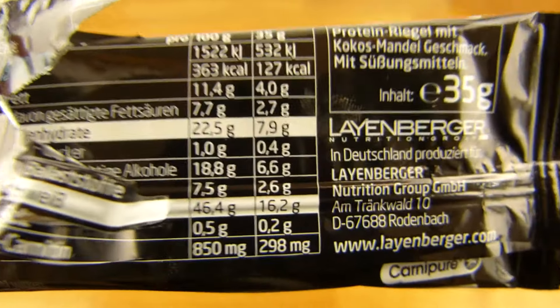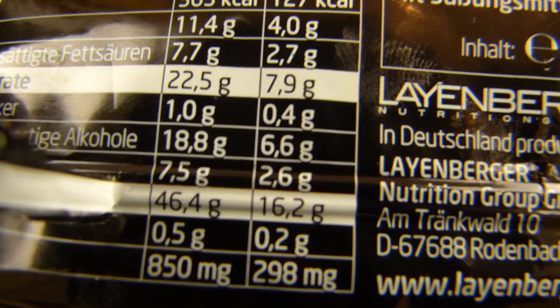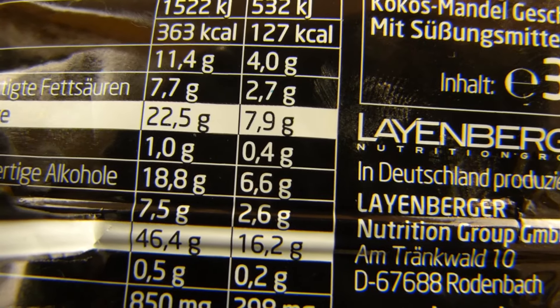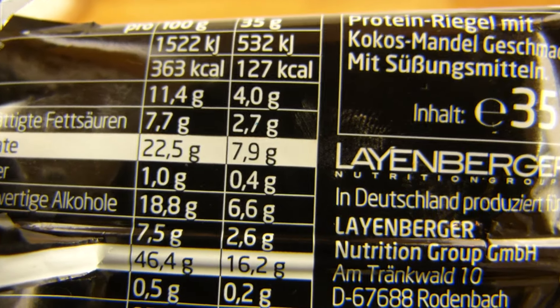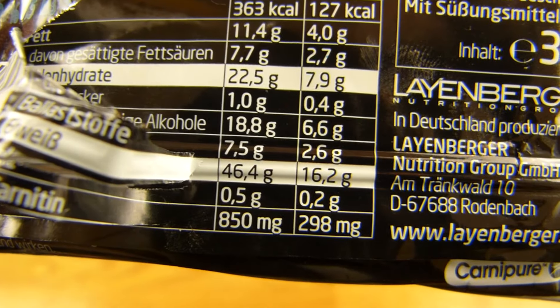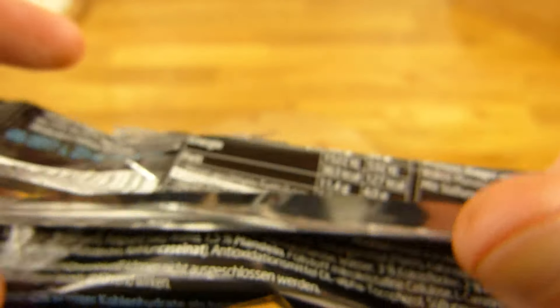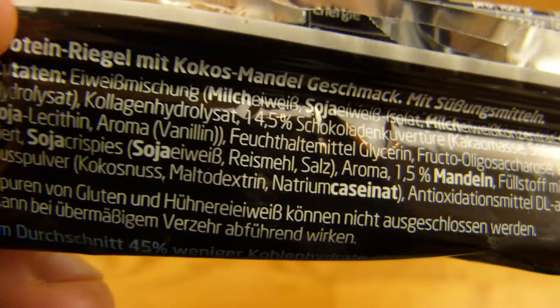Und zweitens hat der pro 100 Gramm nur 370 Kalorien. So, es sind 150 oder so weniger als Schokolade, das ist schon ein bisschen was. Dann sind pro Bar oder Riegel 16,2 Gramm Eiweiß drin. Und etwas Fett. Nicht wirklich niedrig, aber auch nicht richtig hoch. Okay. Am Tränkwald. Ja, und das soll Kokos Mandel Geschmack sein, kommen wir gleich zu. Erstmal die Eiweiß Mischung.